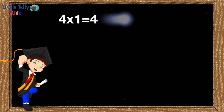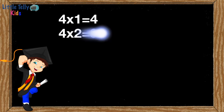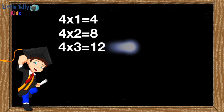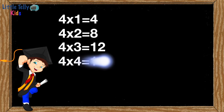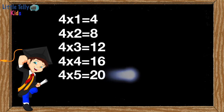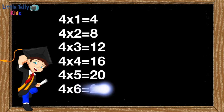Four ones are four. Four twos are eight. Four threes are twelve. Four fours are sixteen. Four fives are twenty. Four six are twenty-four.